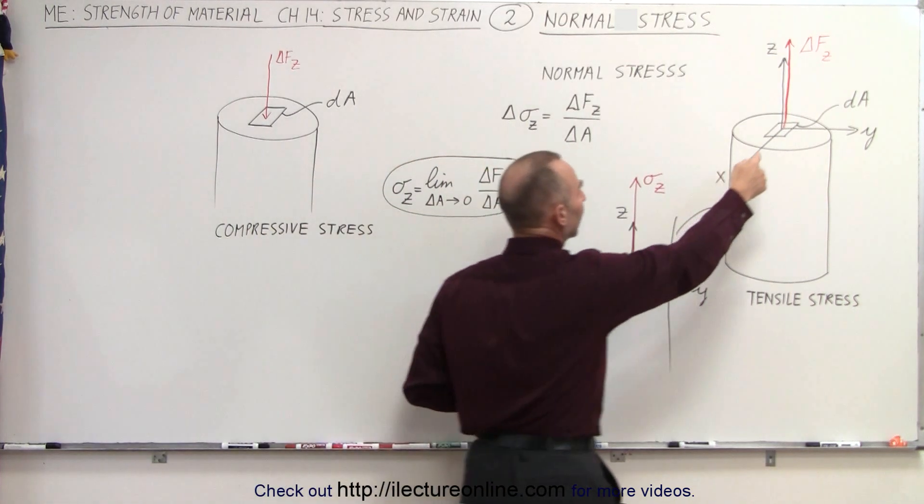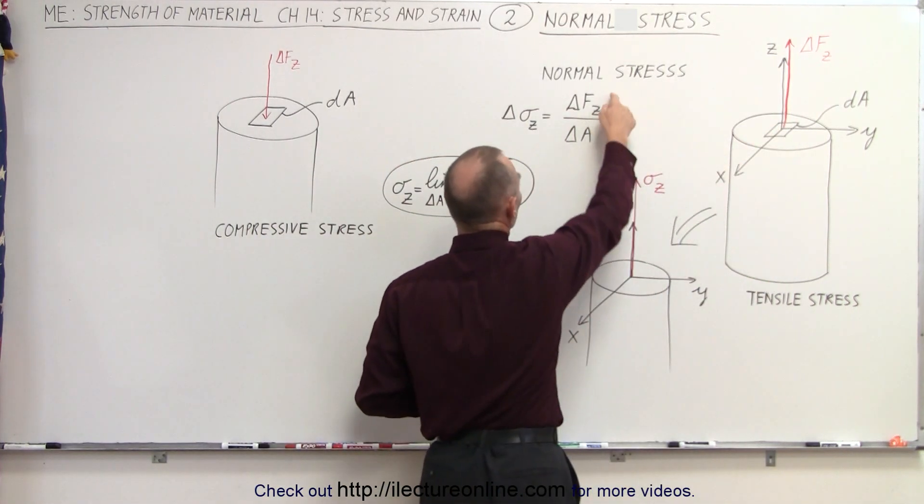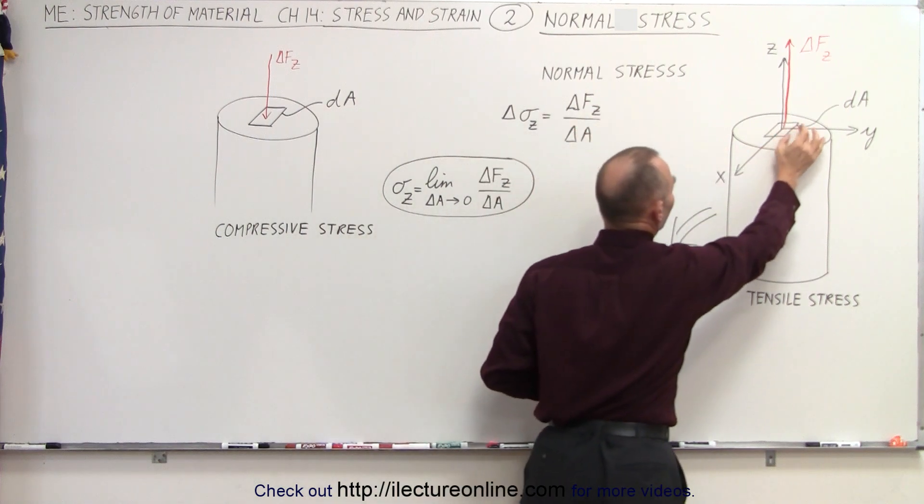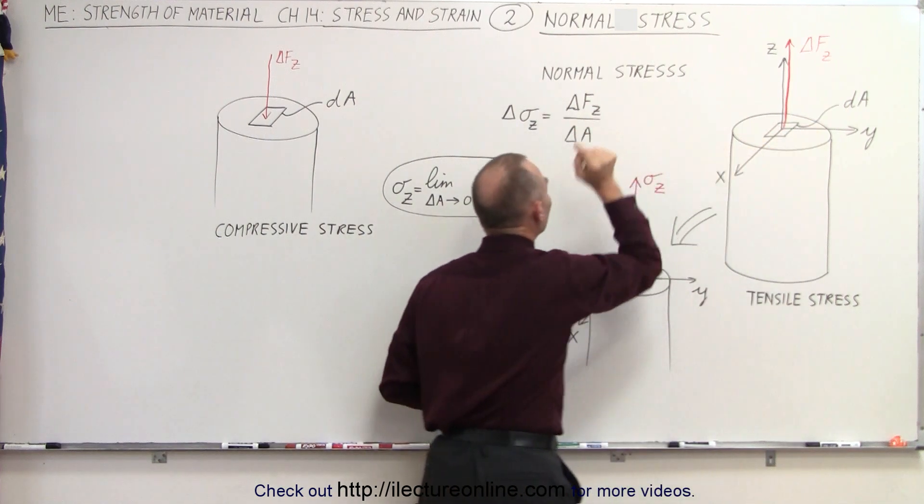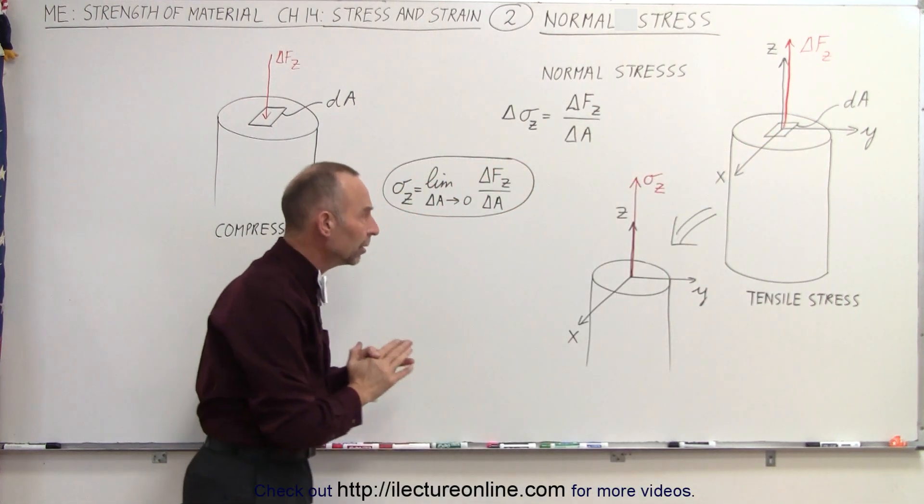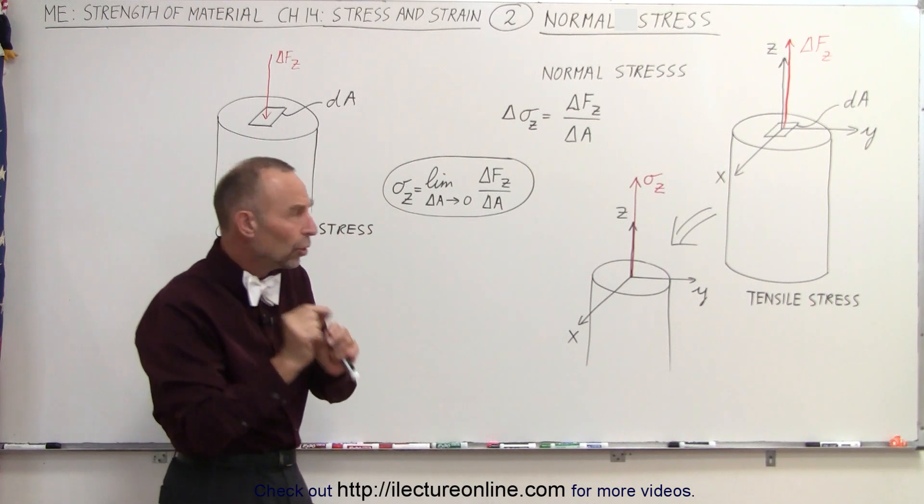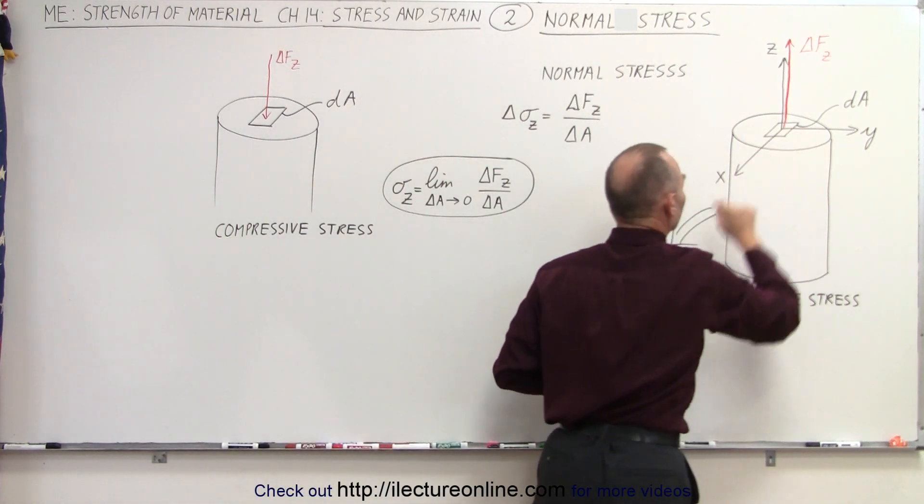The normal stress for that small little area element is defined as the ratio of the force applied to that small area element divided by that small area element. But what if we want to know the normal stress at some point in the cross-section?